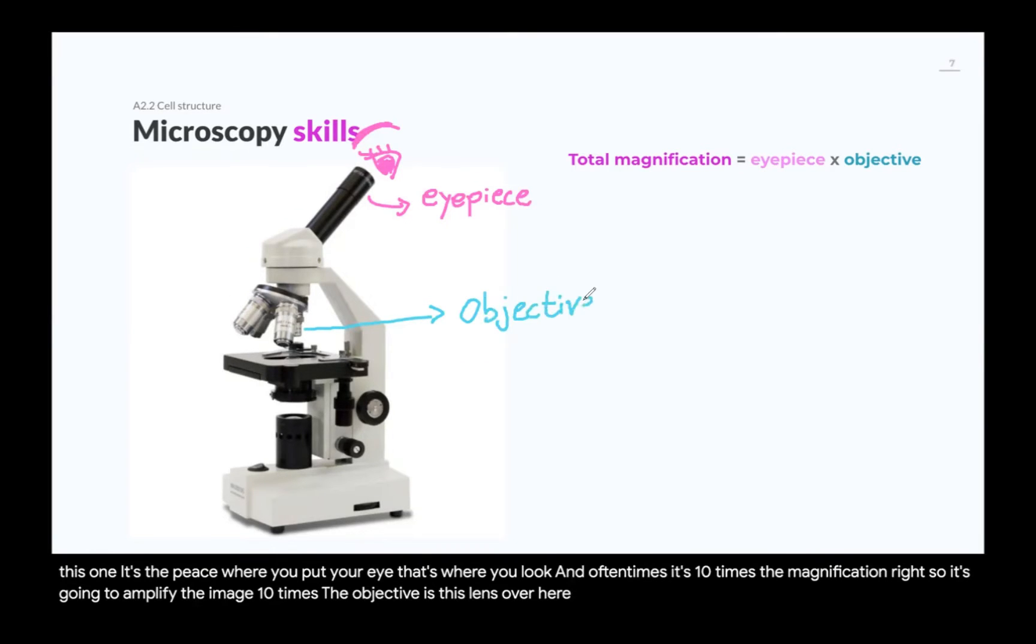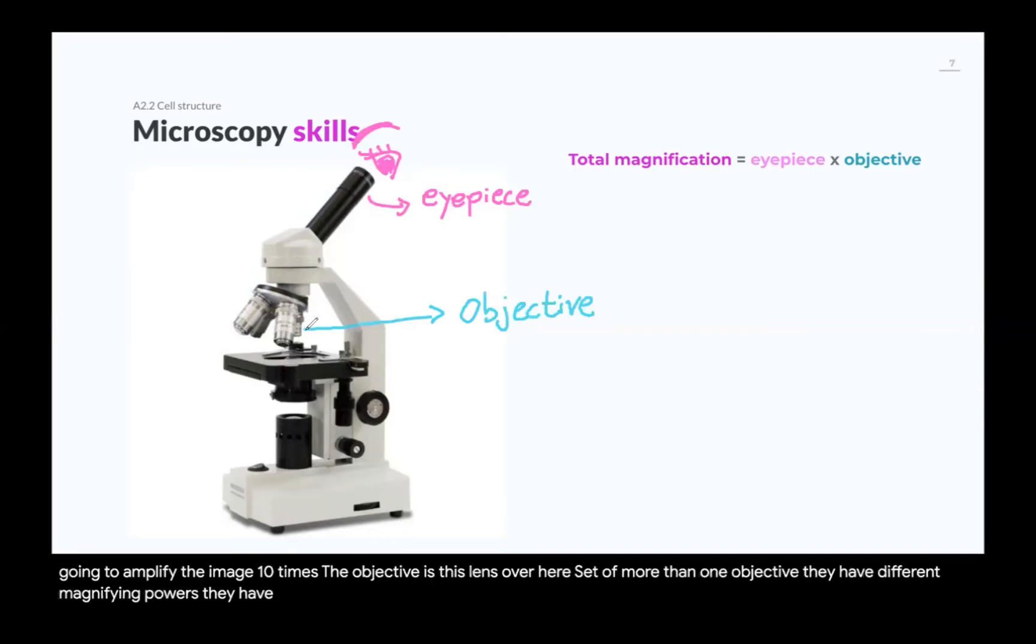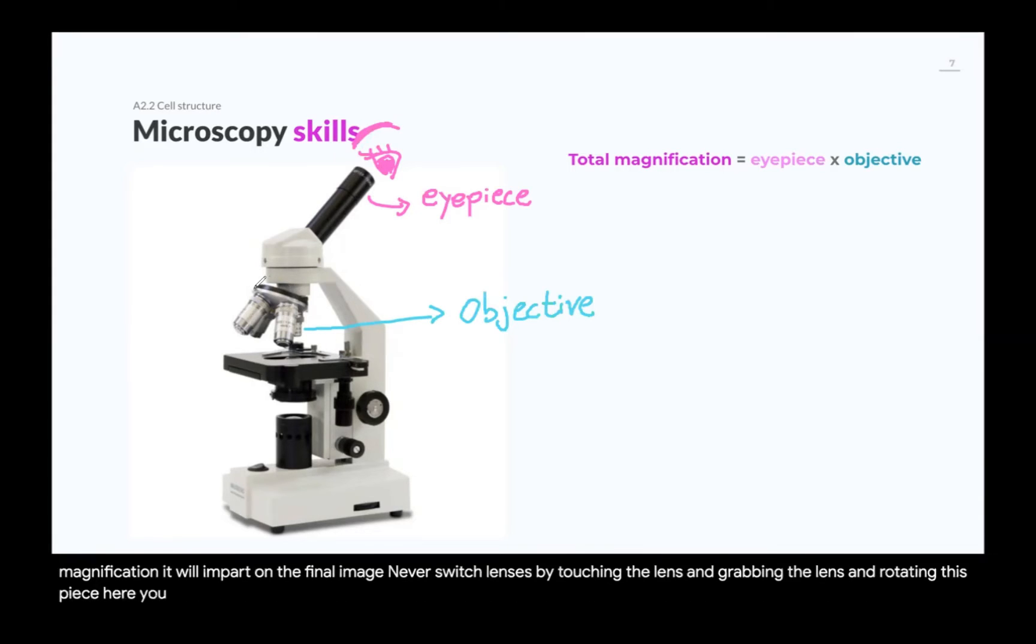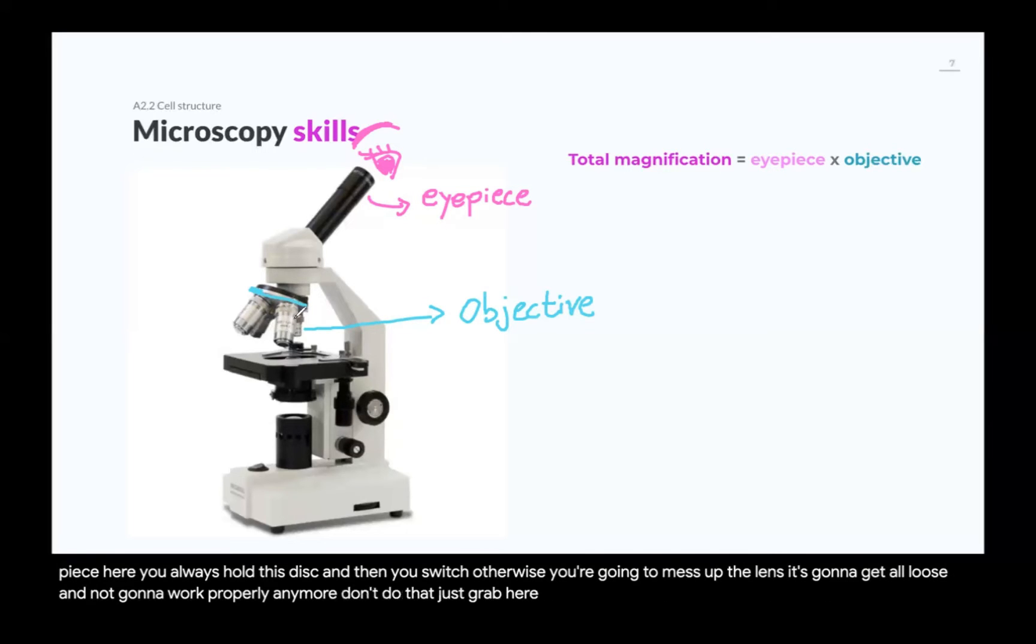The objective is this lens over here. And often, you have a set of more than one objective. They have different magnifying powers. They will magnify by different amounts. The shorter the lens, the less magnification it will impart on the final image. You should never switch lenses by touching the lens and grabbing the lens and rotating this piece here. You always hold this disc and then you switch. Otherwise, you're going to mess up the lens. It's going to get all loose and not going to work properly anymore. Don't do that. Just grab here. The disc can switch.